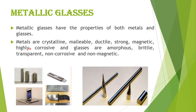Metals are crystalline, malleable, ductile, strong, magnetic, and highly corrosive. Glasses are amorphous, brittle, transparent, non-corrosive, and non-magnetic.